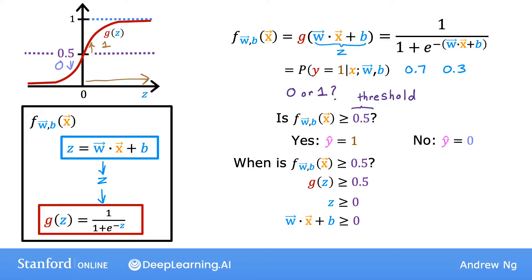To recap, the model predicts 1 whenever w dot x plus b is greater than or equal to 0. And conversely, when w dot x plus b is less than 0, the algorithm predicts y is 0. Given this, let's now visualize how the model makes predictions.